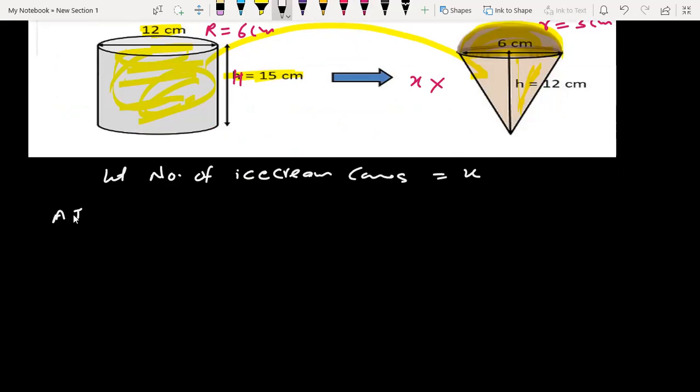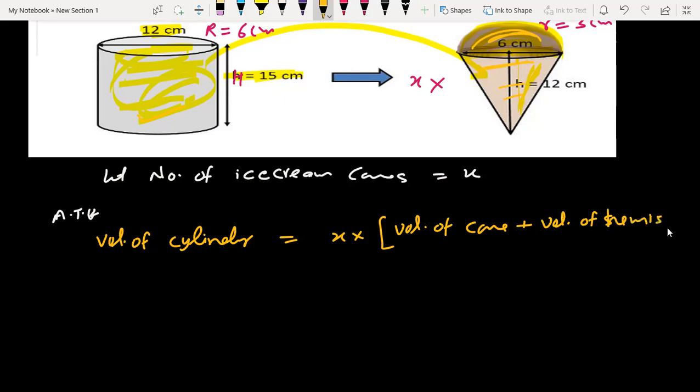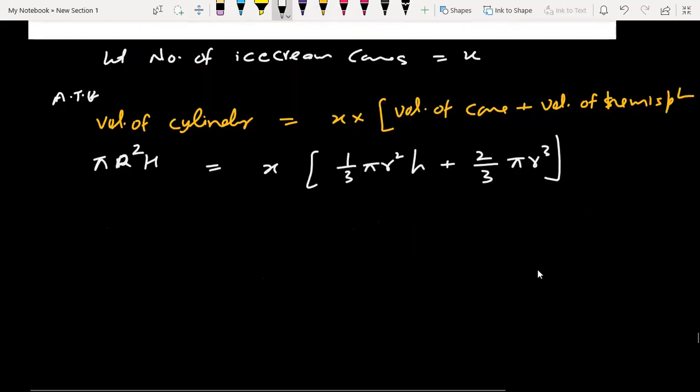According to the question, volume of cylinder equals x times the volume of one ice cream cone. Volume of cone plus volume of hemisphere equals 1/3 πr²h plus 2/3 πr³.